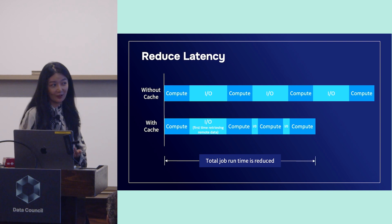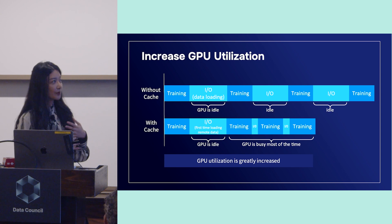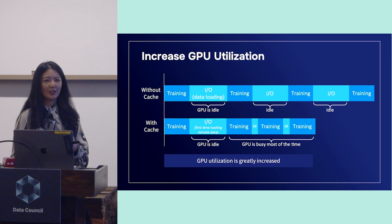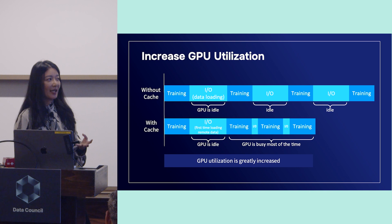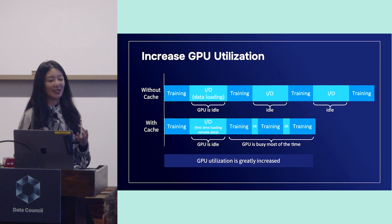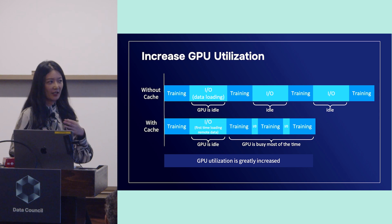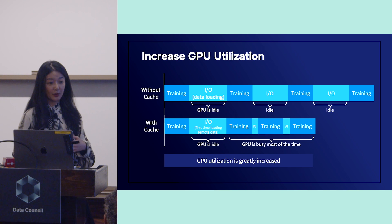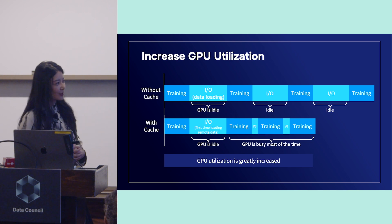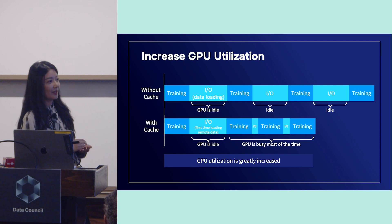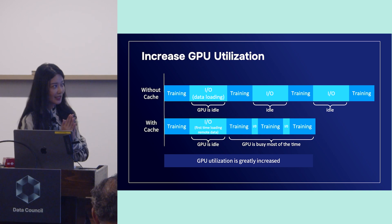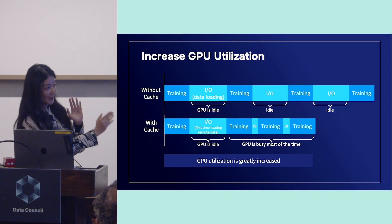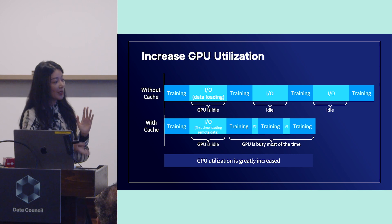This is also related to GPU utilization. I mentioned 30% to 50% GPU utilization. For Ray and PyTorch kind of engines, they have a data loader component — PyTorch has a DataLoader and Ray has Ray Data. Their behavior is to load data at the beginning of each epoch, meaning expensive GPUs have to wait for data retrieval at the start of each epoch. With cache, the I/O portion is greatly shortened or even eliminated, so GPU is almost always busy — utilization increases greatly.